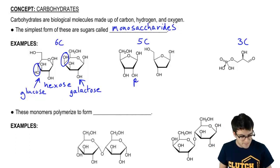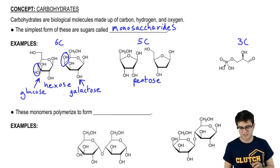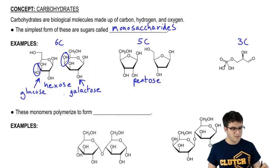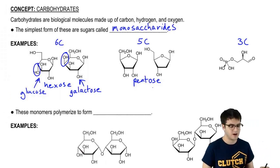Moving on, we have these pentoses. Just like hex means six and -ose means it's a sugar, pent means five, and again, -ose means it's a sugar. So these are five carbon sugars.